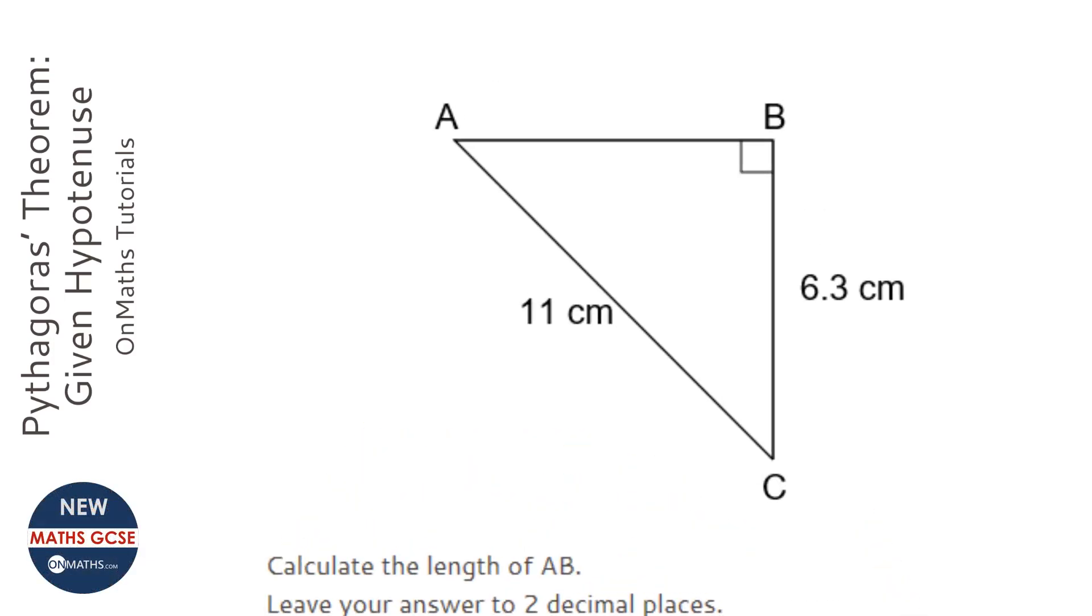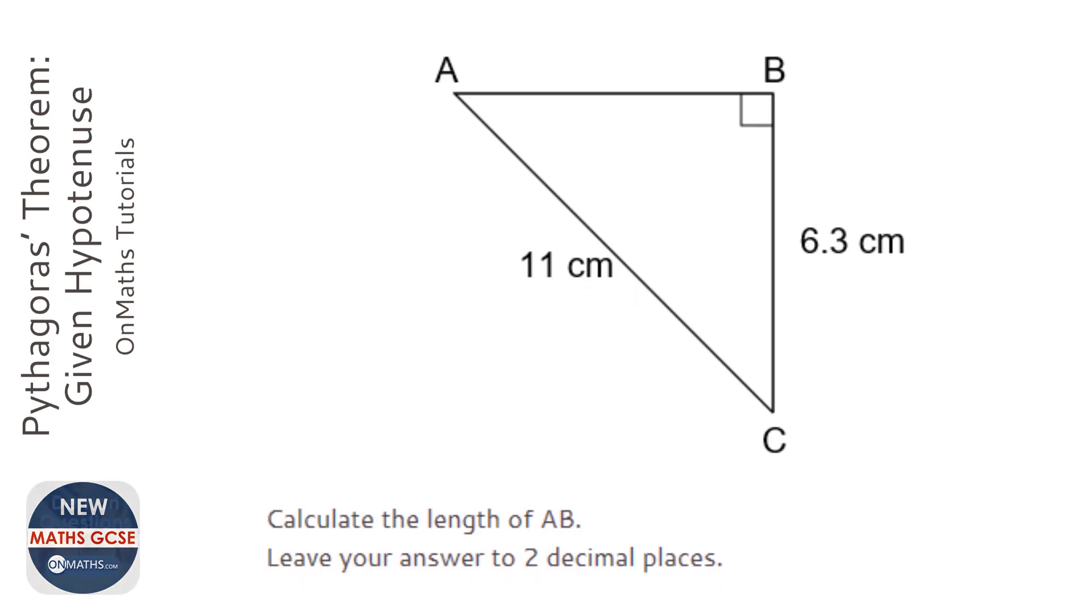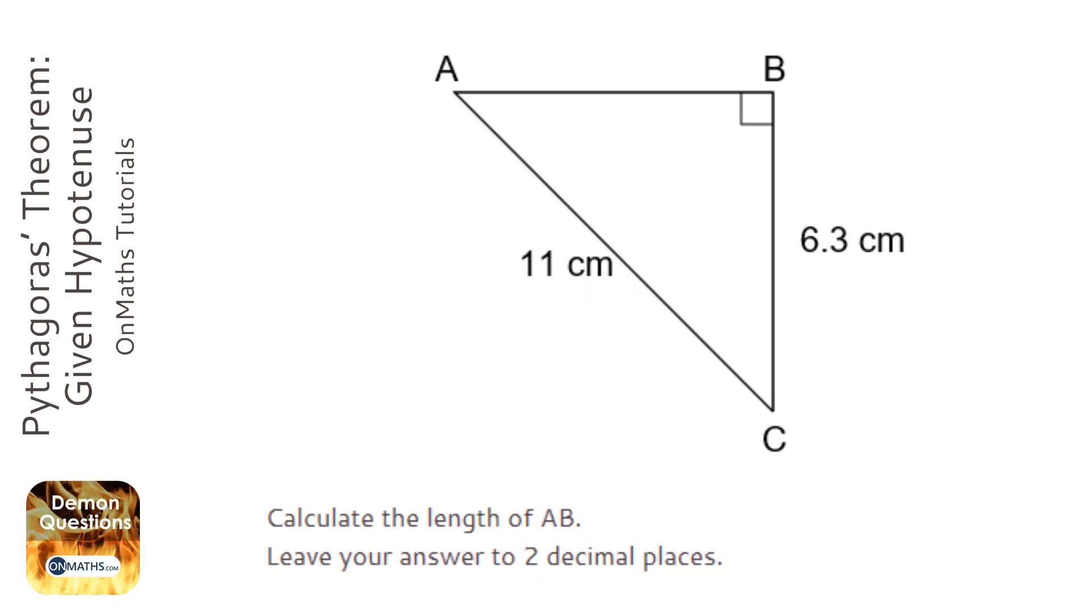Okay, the first thing to realize with this question is it's a Pythagoras question. We've got a right angle triangle and we're looking for the third side given two sides. Now the next thing to do is label the sides, so the one opposite the right angle we always label c, the other two it doesn't matter.